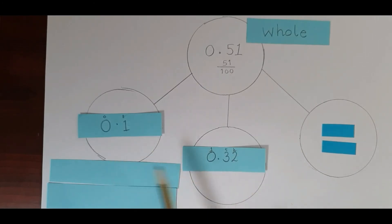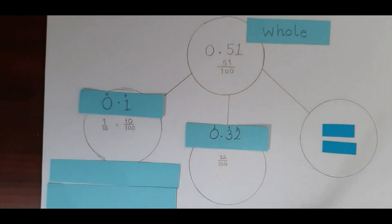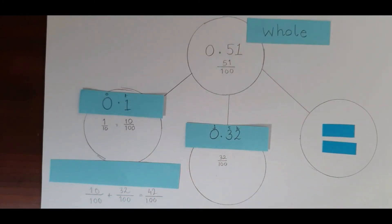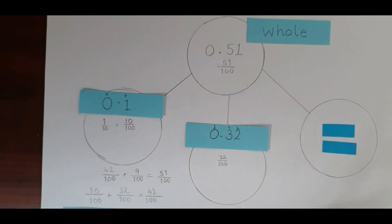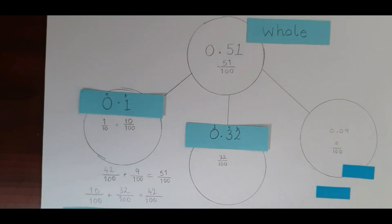Let's start by converting the two decimals into fractions. 0.32 would be thirty-two hundredths. And 0.1 would not be one hundredth — remember, it would be one tenth or ten hundredths. For this question I'm going to focus only on the hundredths. Ten hundredths add thirty-two hundredths makes forty-two hundredths. To work out the final part, I'll count on from forty-two hundredths to fifty-one hundredths — or you could subtract forty-two hundredths from fifty-one hundredths — and that gives us nine hundredths. Now turning it into a decimal: there are no ones, no tenths, and only nine hundredths, so it would be 0.09. Well done if you got that correct!